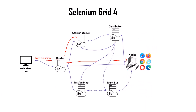After that, we are left with the component called Event Bus. This bus is used as a communication medium between nodes, distributor, new session queue, and session map. The grid uses the Event Bus for its internal communication. When we set up the grid in distributed mode, the Event Bus is the first component that should be started, so that the grid can communicate with all components using this Event Bus.